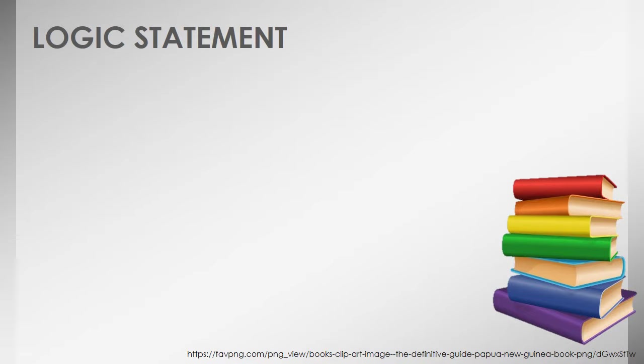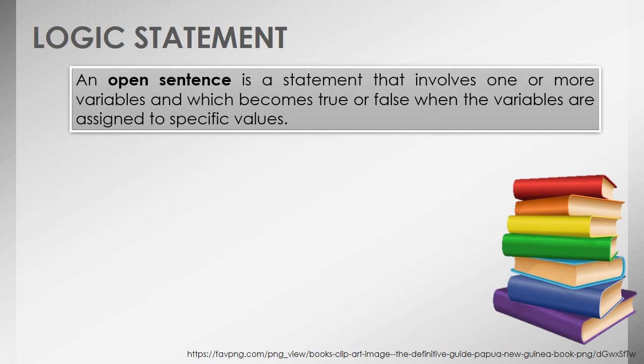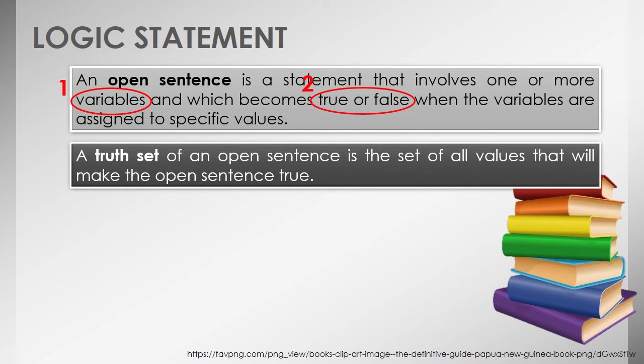A special case of a statement is the open sentence. An open sentence is defined as a statement that involves one or more variables and which becomes true or false when the variables are assigned to specific values. It must have one or more variables, and it must be true or false when the variables are assigned to specific values. Following this is the truth set. A truth set of an open sentence is the set of all values that will make the open sentence true — its elements are those values that make the open sentence true.